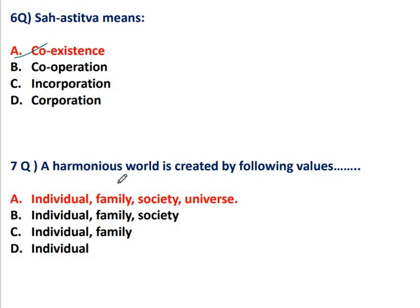Question 7: A harmonious world is created by following values at which levels? At the individual level — harmony with self — then harmony with family, society, and universe or nature. So the correct answer is A: individual, family, society, and universe. If nature appears in place of universe, that is also correct.